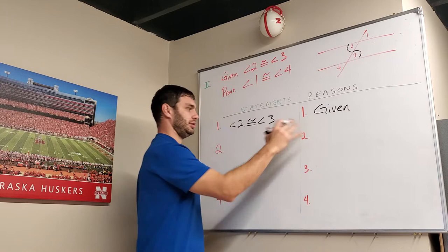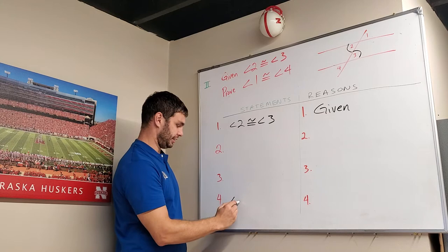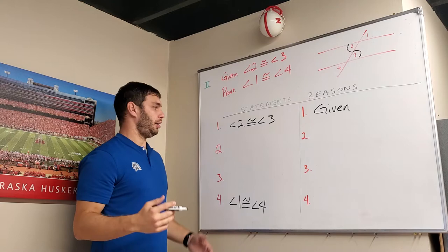And then in the prove category, I want to put what that statement is, and that's angle 1 is congruent to angle 4. Now we've got to fill in the rest. And this is the hard part.